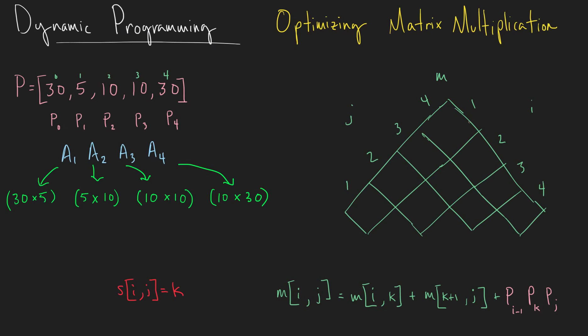We're also going to need a two-dimensional array M that will hold the minimum number of scalar multiplications that it takes to compute the product of matrices I through J. Here is the equation to compute each one of these. And then we also have another two-dimensional array S that holds the value of K every time we compute this. K is going to be the last index of our first group when we group these matrices together, when we parenthesize them. And then we will have the rest of the group parenthesized.